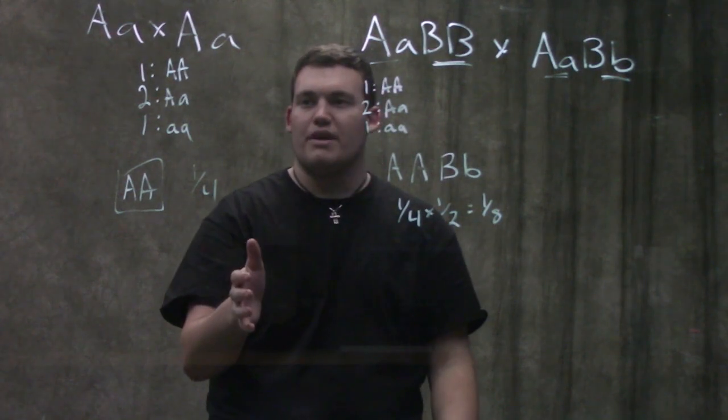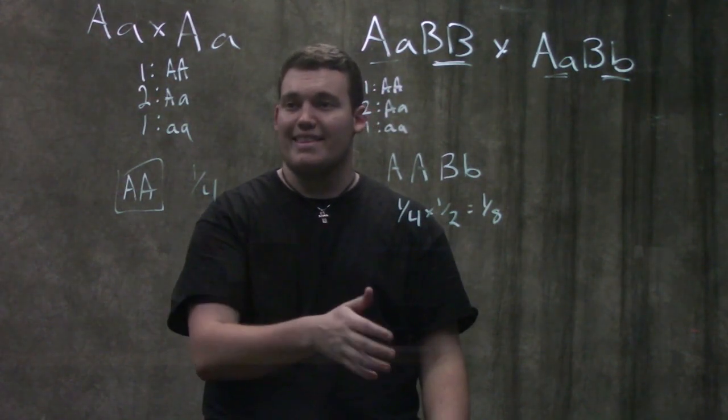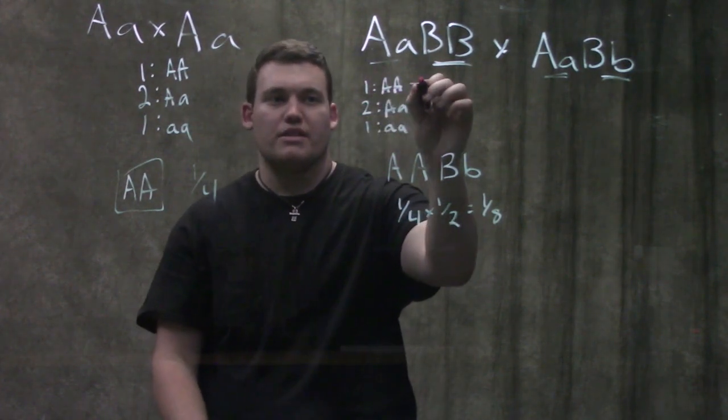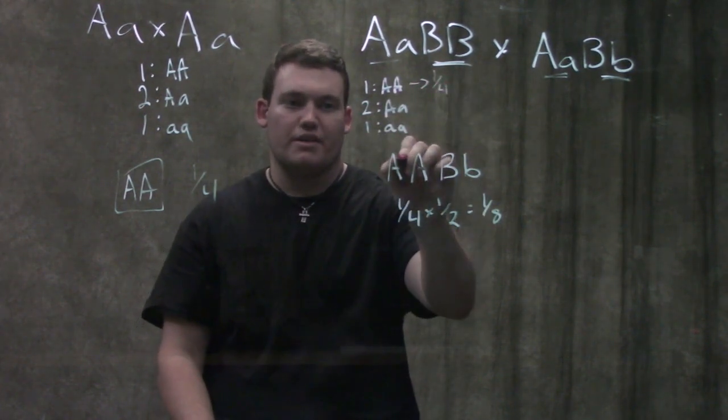So we're going to take this one. And because they're independent and we want both, we want this and that, we're going to be multiplying the probabilities times each other. So we've got one to two to one. So that means that this guy has a one quarter chance of being this.